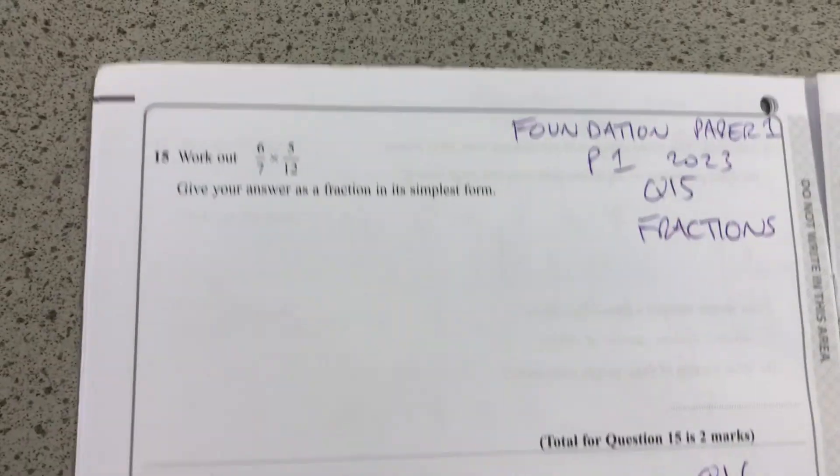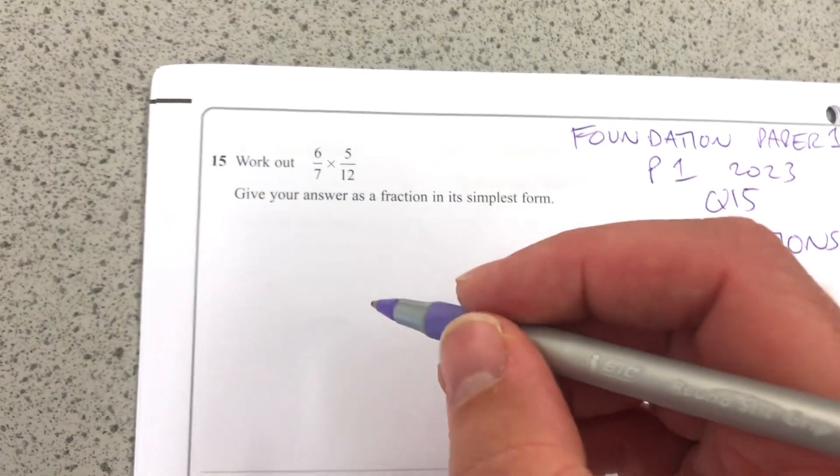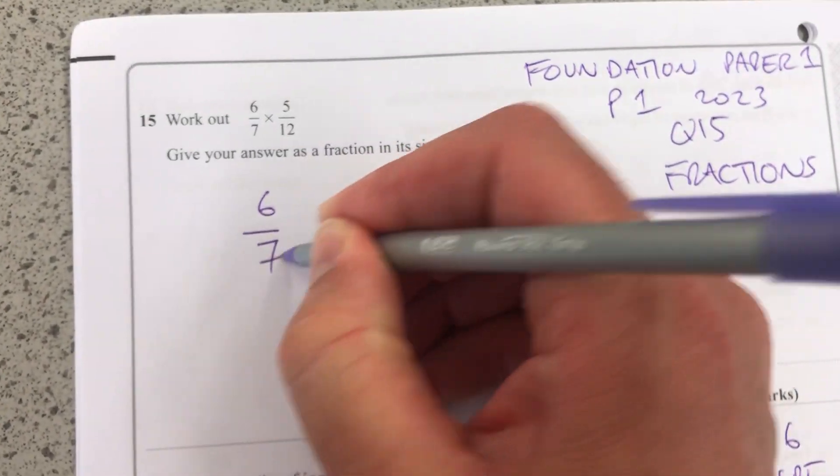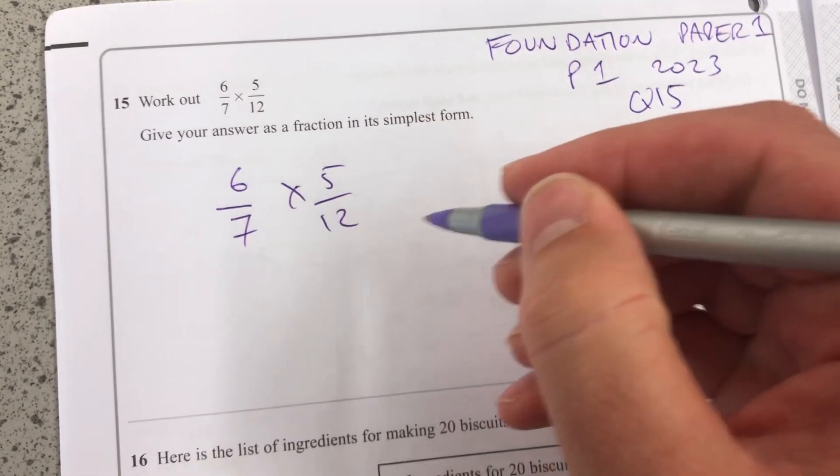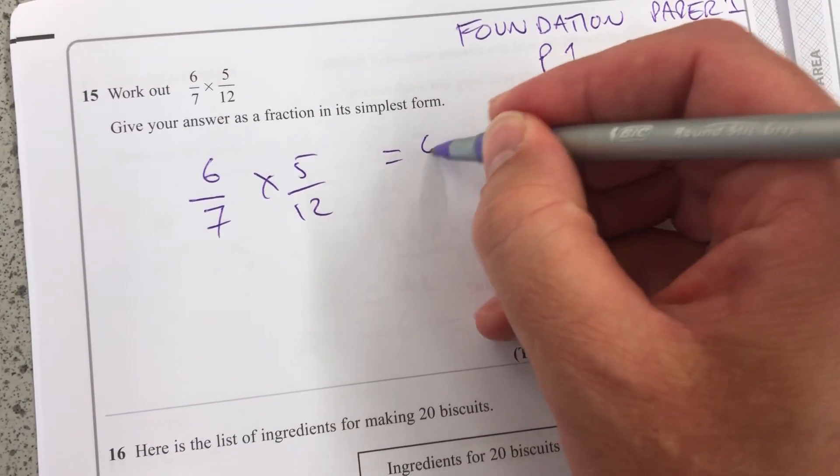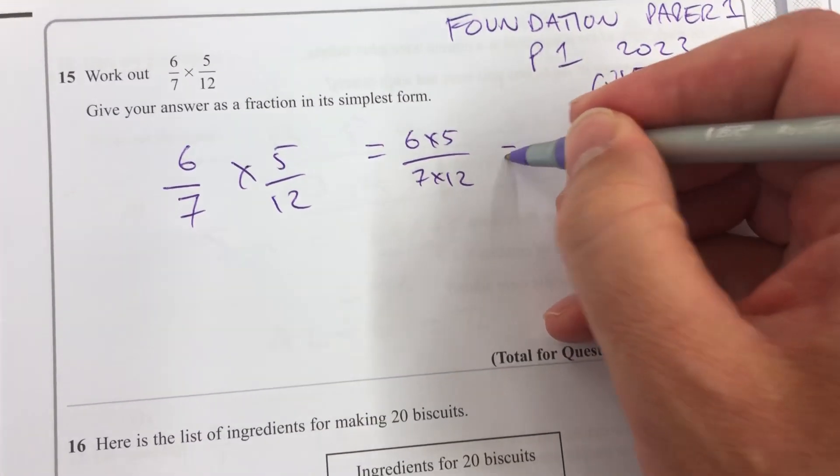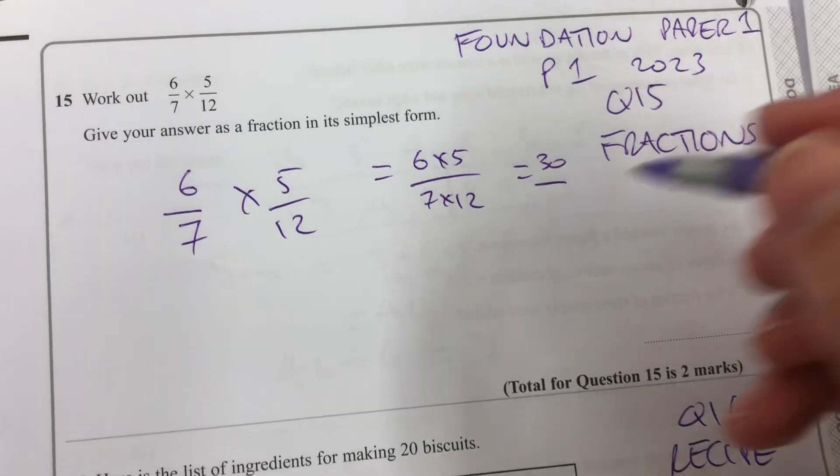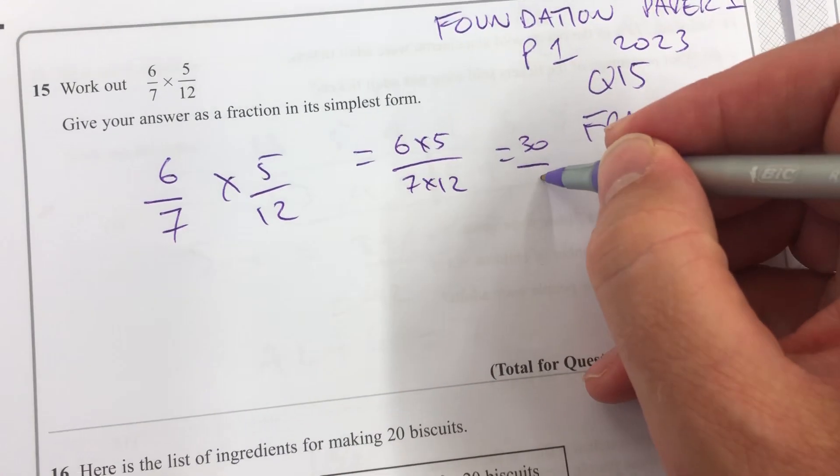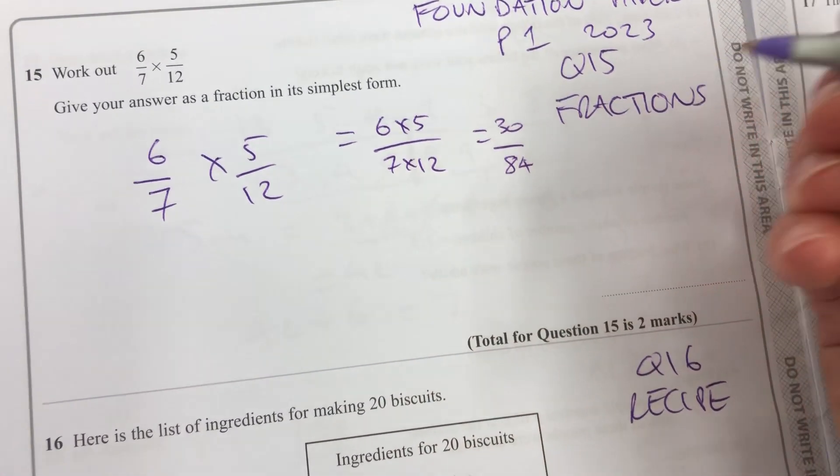This question is about fractions. We've got to work out 6 over 7 times 5 over 12. Now, one way to do it is just to multiply across: 6 times 5 over 7 times 12, which is 30 over 84.